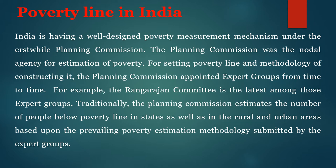The minimum standard of living is set as the basket of goods and services commonly used by the people. Based on this consumption pattern, the expert group estimates the minimum consumption level and the income needed to obtain these goods and services in both rural and urban areas. This income level acts as the poverty line. Poverty line methodology has been changing in India over time, from the first attempt to set the poverty line by the Working Group in 1962 to the Rangarajan Task Force in 2014.